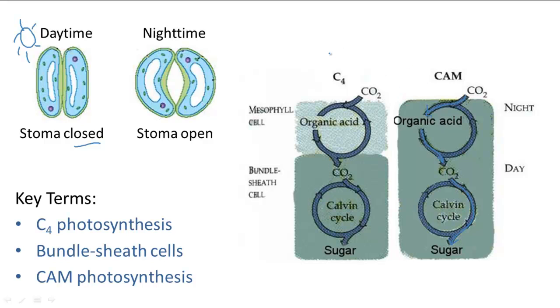You can see from the comparison of the C4 and CAM plant cycles that they both have an extra cycle beginning with CO2 to convert into an organic acid, which converts back into CO2 for the Calvin cycle to use. The difference is that C4 plants have two different sites in which these cycles occur, the mesophyll and the bundle sheath cell, whereas CAM plants have two different times in which these cycles occur, which is the night and the day.